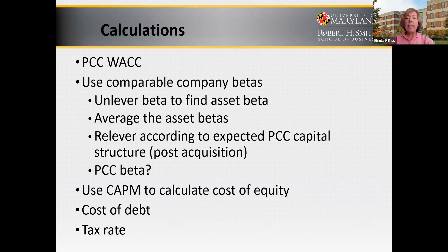Once you have a beta, you'll use the Capital Asset Pricing Model — CAPM — to calculate the cost of equity. CAPM states that the return on equity equals the risk-free rate plus beta times the market risk premium, where the market risk premium equals the return on the market minus the risk-free rate. Typically, you will use a historic risk premium since we can't actually calculate an expected market return.